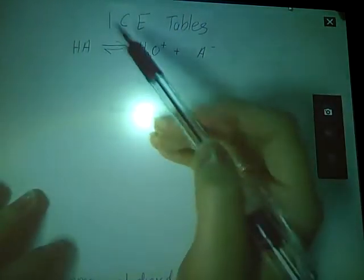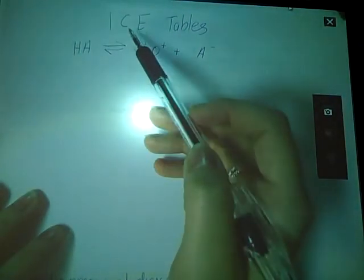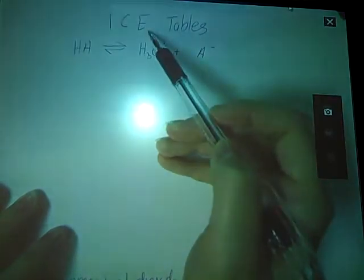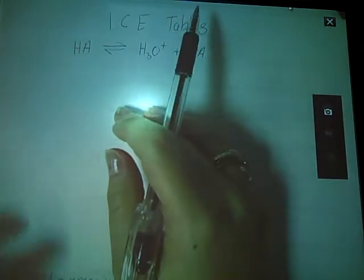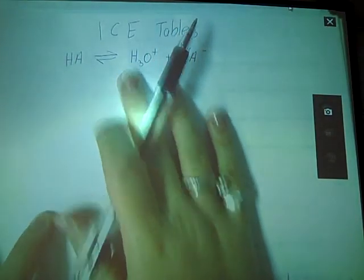ICE tables stands for initial, change, and equilibrium. So we're going to set up a table of these concentrations for a given situation.